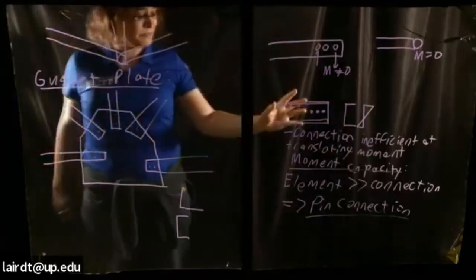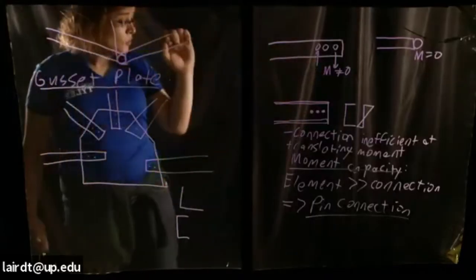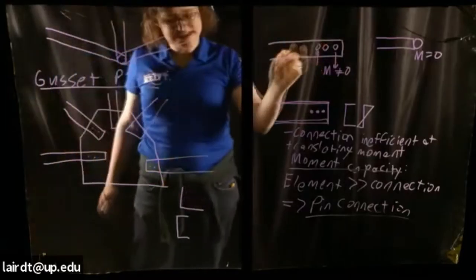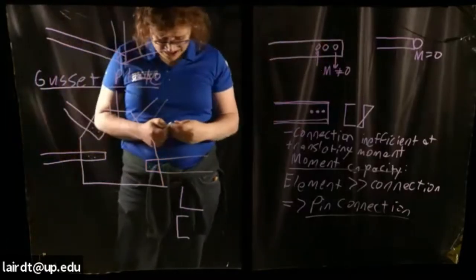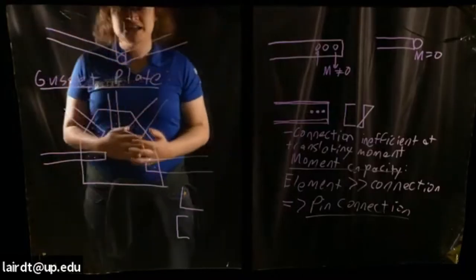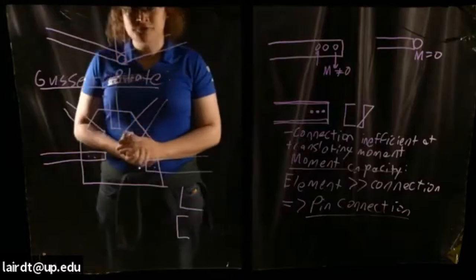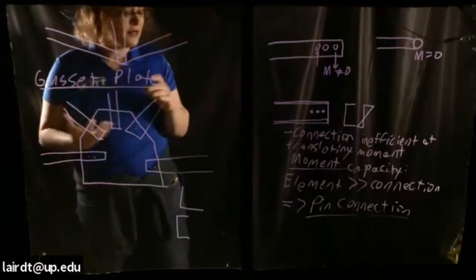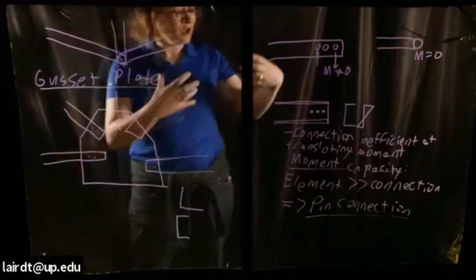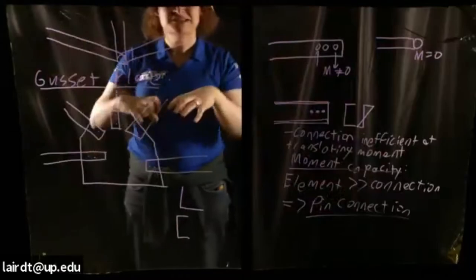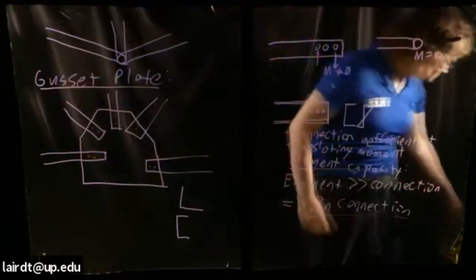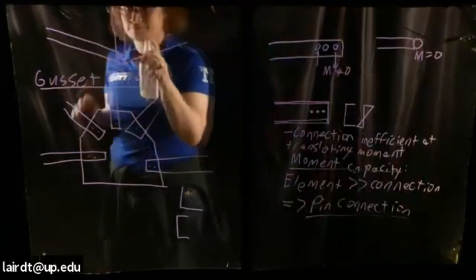This is a great example of engineering models versus reality — where we model something as having zero moment capacity, but in reality it does have some capacity. For design, that is often okay. Everything we do in engineering is based on approximations and models. The real world has infinite variables, and if you ever want to build anything, you have to make educated and intelligent approximations to distill down the complexity of the world into something we can actually work with mathematically.